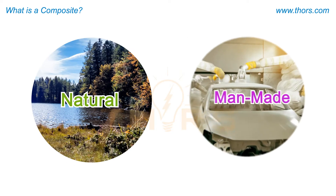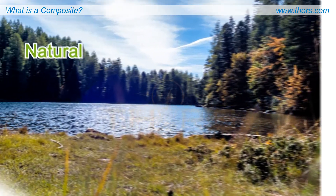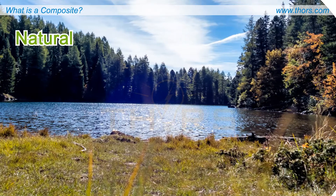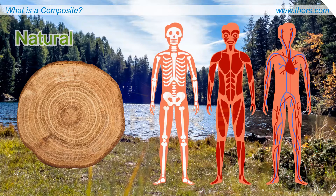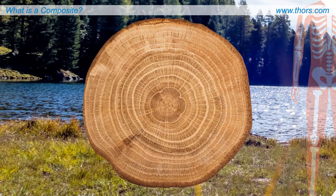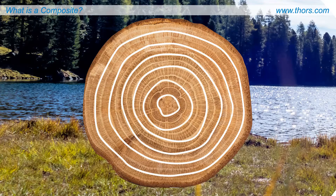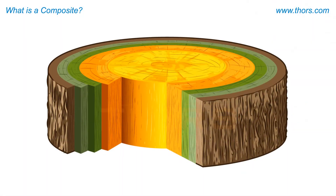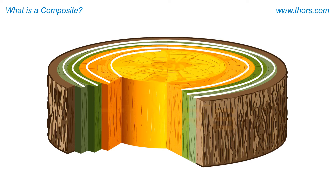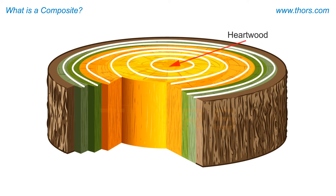Composites are either formed naturally or are manufactured. Examples of natural composites are a tree trunk and the human body. In a tree trunk, cellulose strands of the tree are like fibers that are bonded together by the lignin, which is an organic polymer that acts as a matrix. The hardened layers of cellulose fibers and lignin form the tree's rings. The innermost or oldest rings, which are cured, form the heartwood, which is the composite.